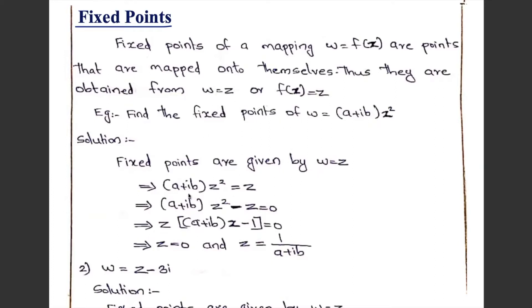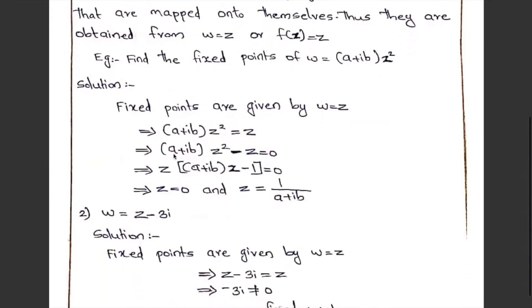Put w equal to z: (a + ib) z squared equal to z, which implies (a + ib) z squared minus z equal to 0. Taking z as a common factor: z[(a + ib)z minus 1] equal to 0. Either z equal to 0, or (a + ib)z minus 1 equal to 0, that is z equal to 1/(a + ib). So these are the fixed points of the function (a + ib) z squared.